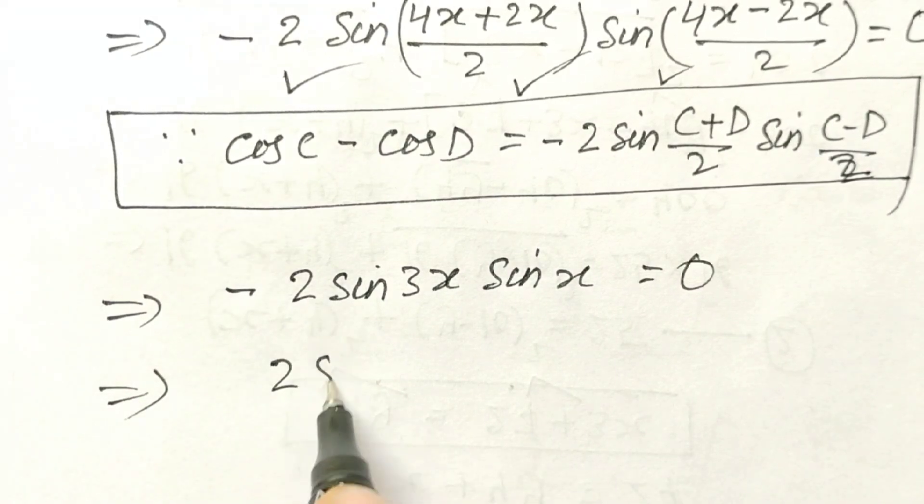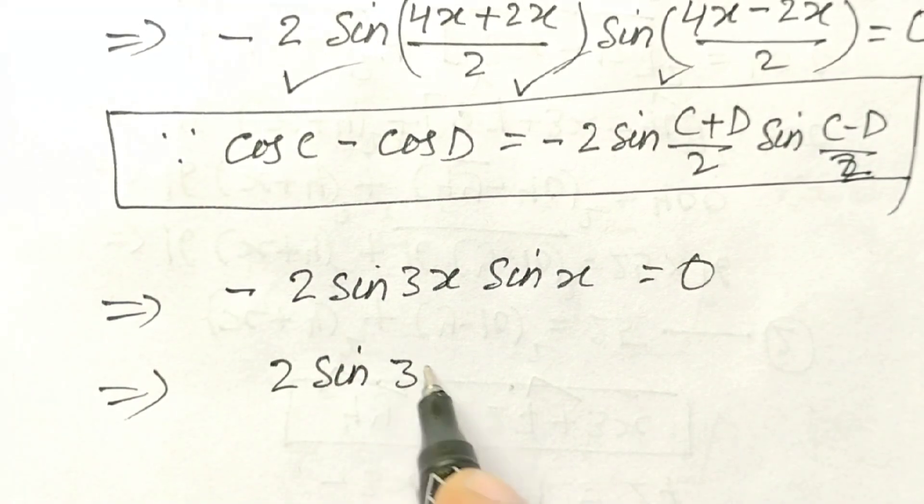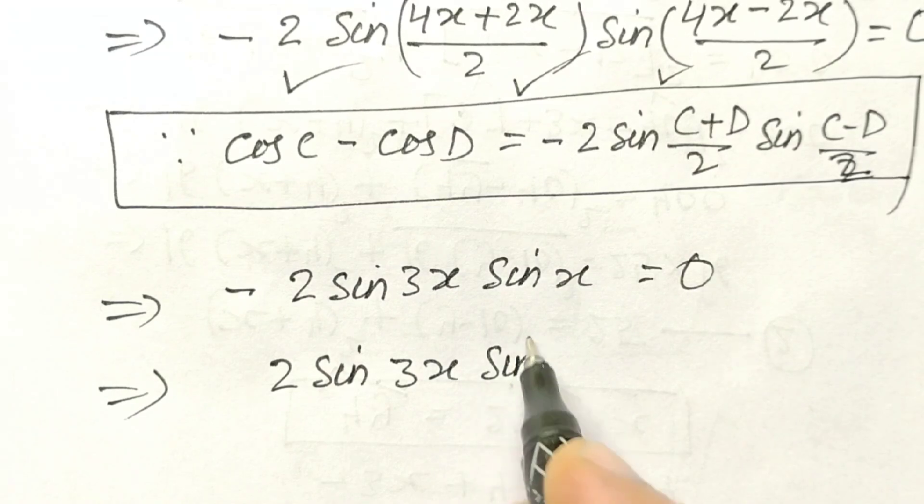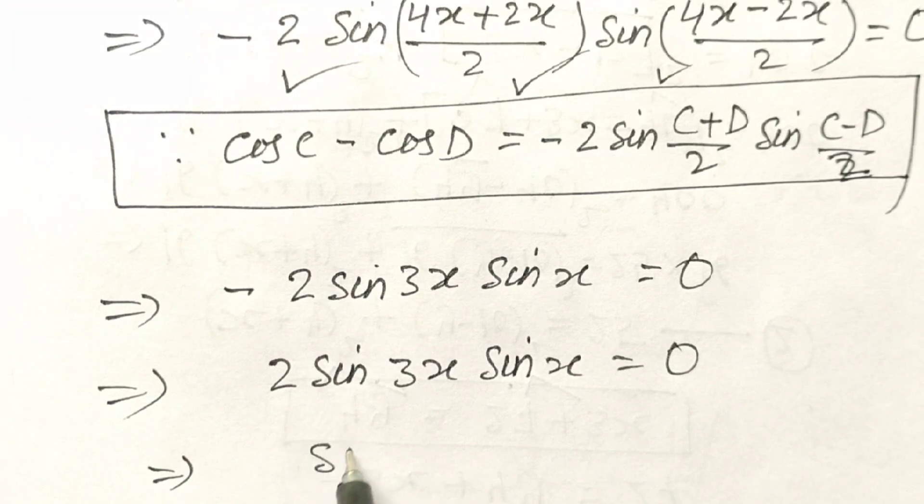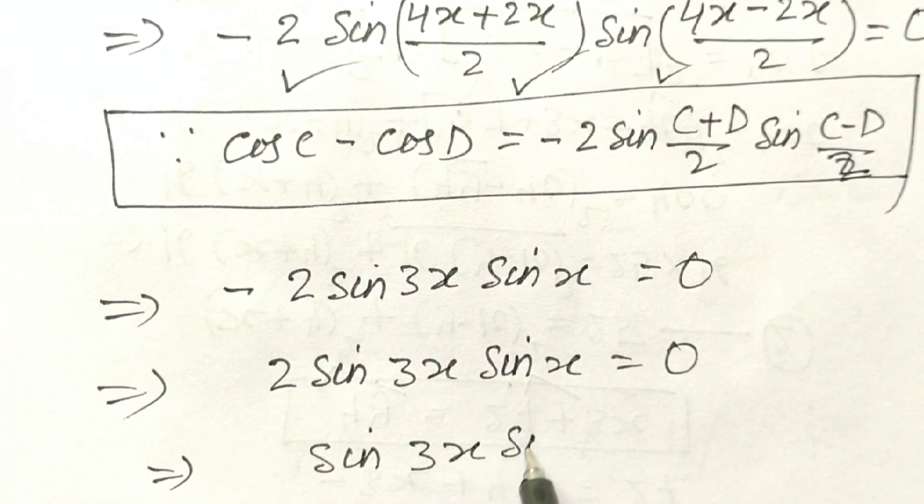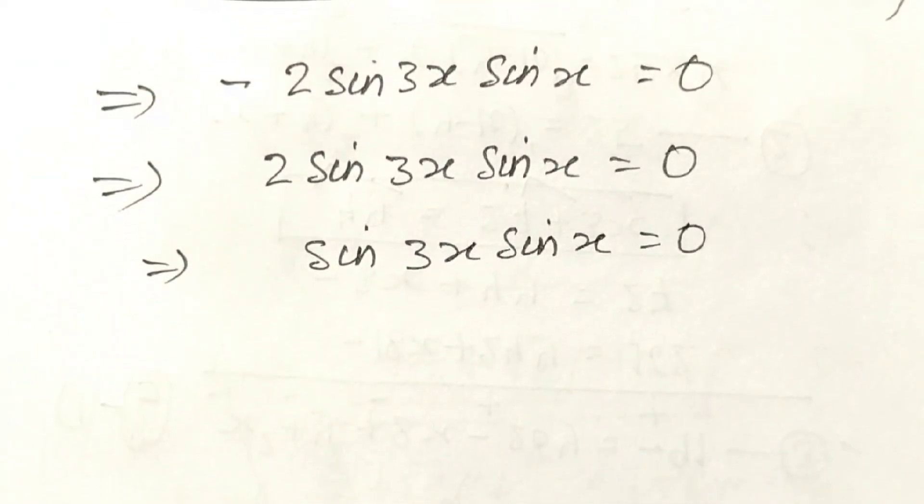So, 2 sin 3x into sin x is equal to 0. Or we can say sin 3x sin x is equal to 0.